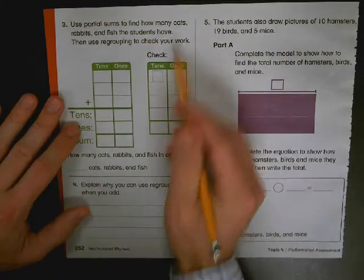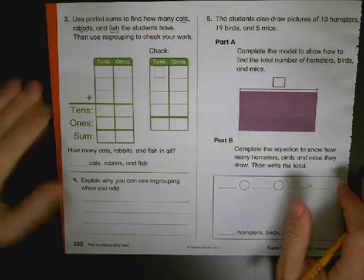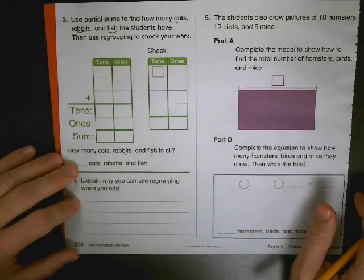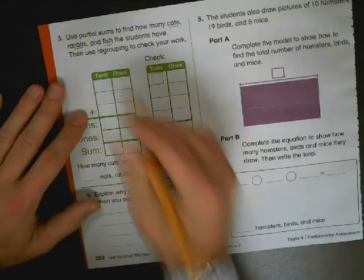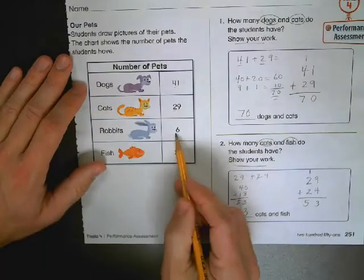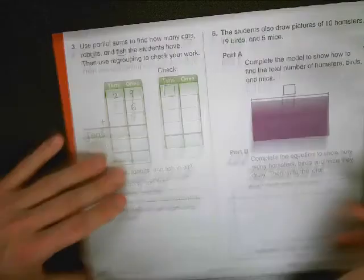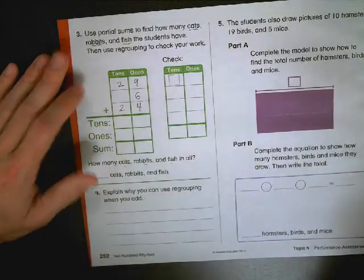Flip it over. Use partial sums to find the cats, rabbits, and fish the students have, then use regrouping to check your work, which is what we did in the front twice. Cats, rabbits, fish. That's three, so you're going to have to flip the paper back over. Unless you have a photographic memory, you're not going to remember the cats, rabbits, fish. Let's do cats first: twenty-nine. Rabbits, flip it over. Let's check for rabbits: six. This is when it gets tricky. If you put the six in the tens, you'll have sixty instead of six ones. Third, but not least, fish: twenty-four.